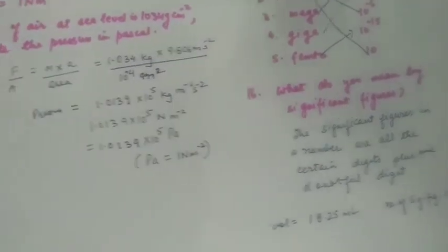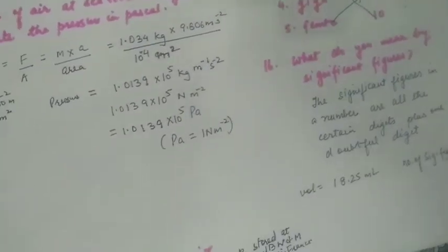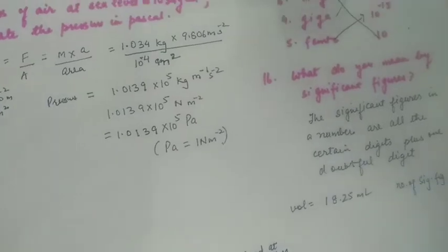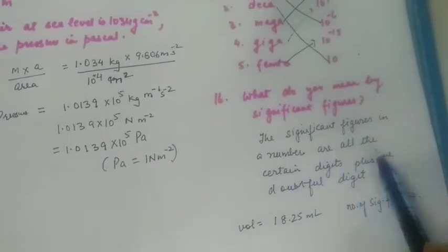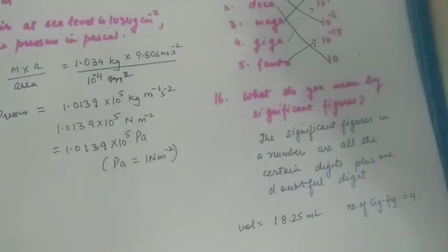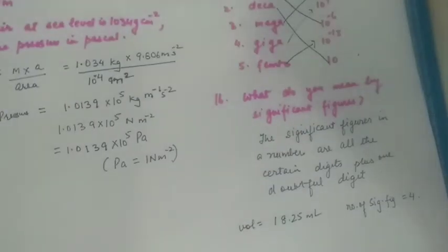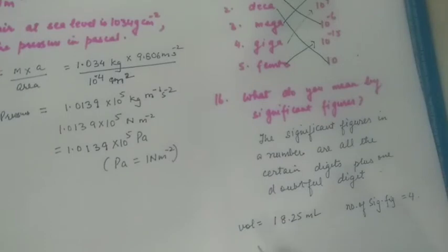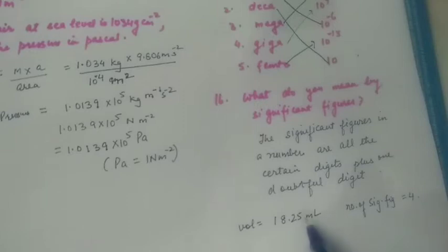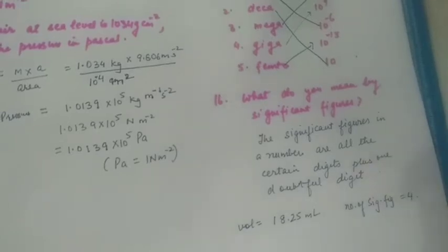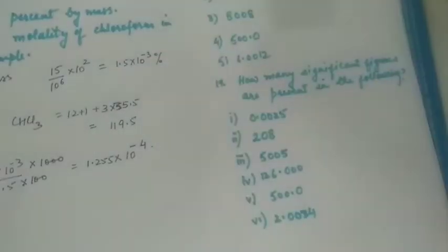What do you mean by significant figures? Significant figures in a number are all the certain digits plus one doubtful digit. For example, if volume is 18.25, then 1, 8, and 2 are certain digits and 5 is the doubtful digit — total significant figures are four.